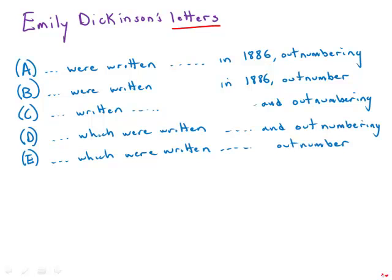So the noun of this sentence clearly is the letters, Emily Dickinson's letters. So Emily Dickinson's letters were written. Okay, that works. And then we have a participle here, outnumbering, but this participial phrase outnumbering her letters to anyone else, that's a modifier.